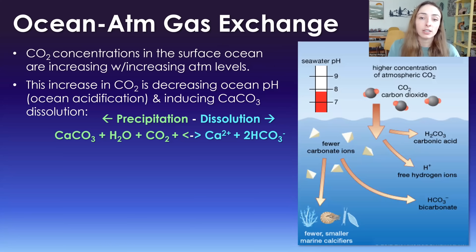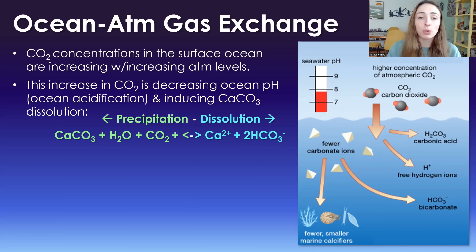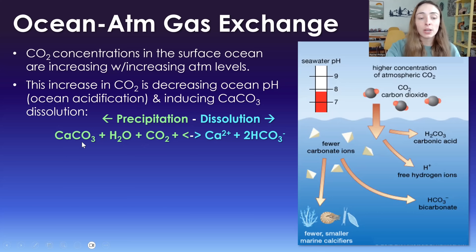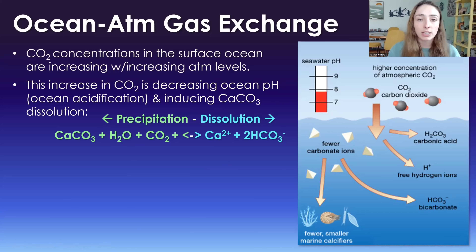The ocean is actually alkaline in its pH — relatively on the basic side — but it is acidifying and becoming more acidic due to the increase in CO₂. The more CO₂ enters the ocean, the more it reacts with water and forms carbonic acid, increasing the concentration of protons. Since acidity is a measure of hydrogen ion concentration, this is making calcium carbonate minerals harder to produce — it's pushing the equilibrium reaction toward the dissolution side, meaning marine life that secretes calcium carbonate skeletons will have an increasingly harder time making their skeletons.